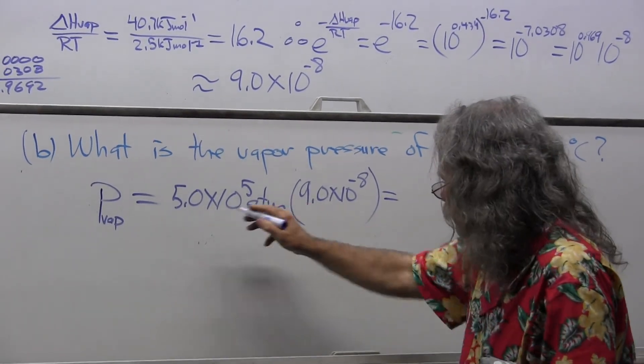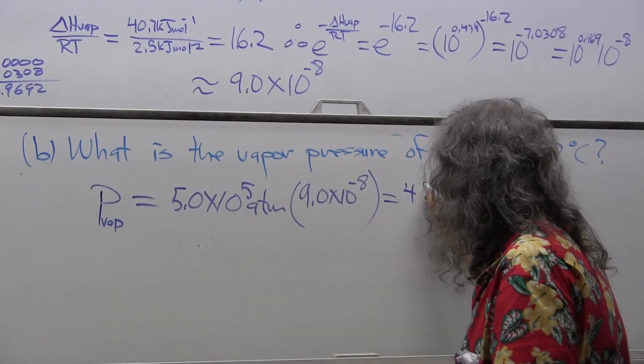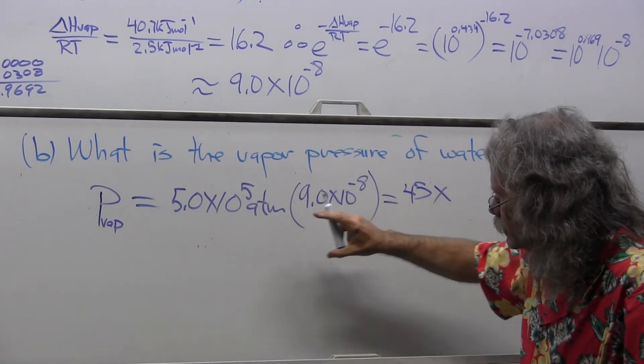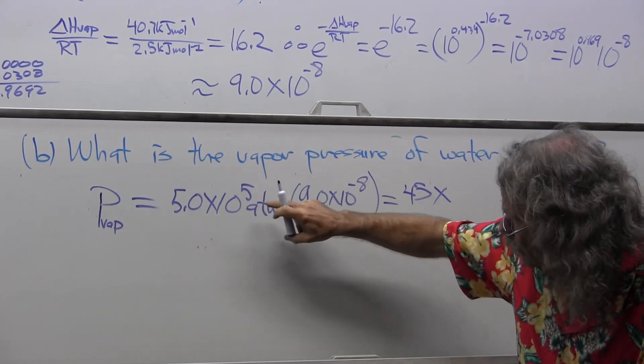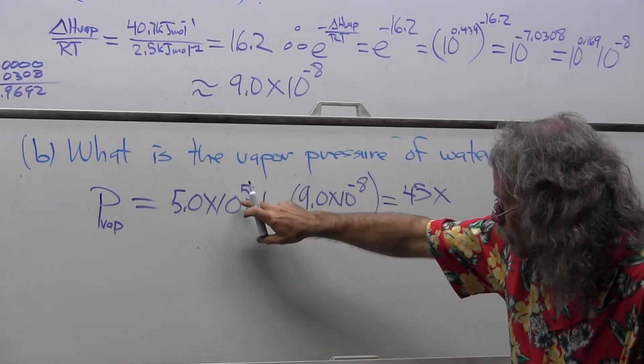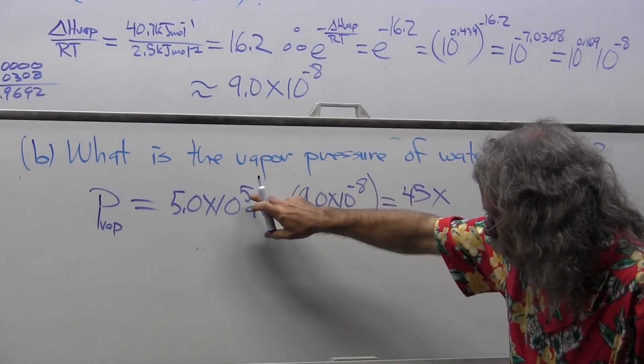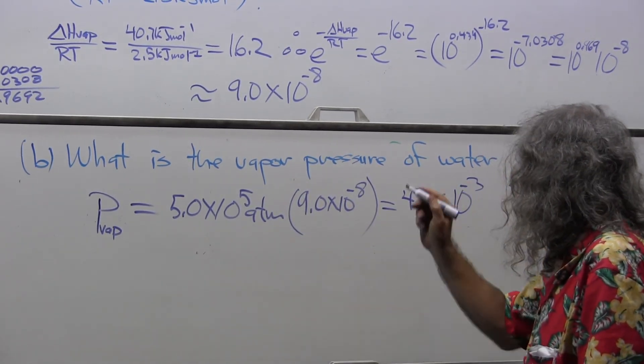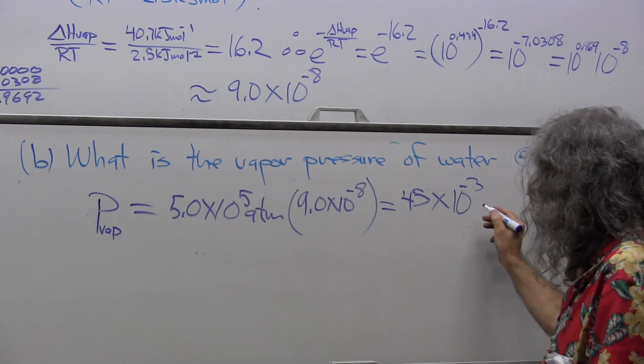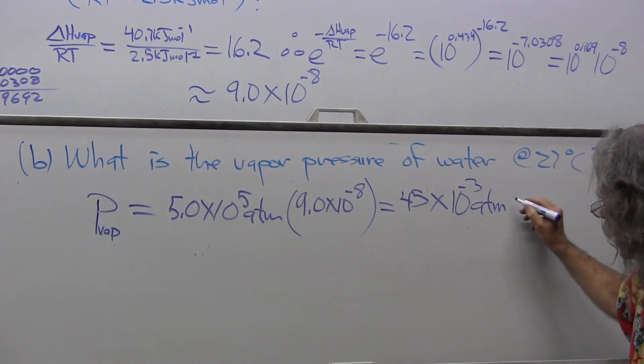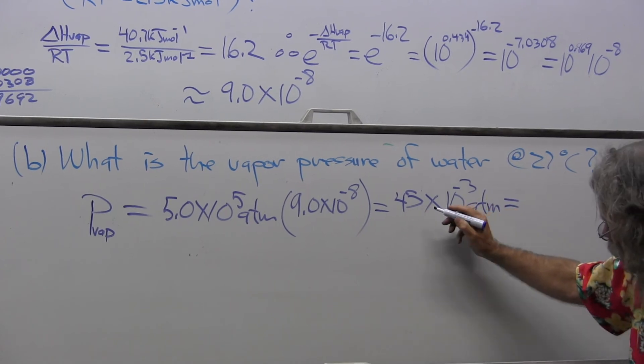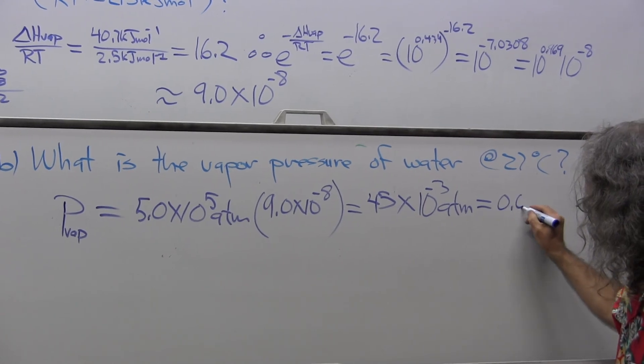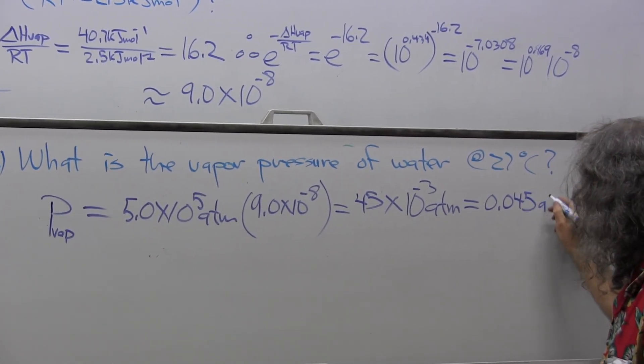That equals 9 times 5 is 45, and that would be times, and now the characteristic terms, the rules of exponents have me, when I multiply two numbers with the same base, I add the exponents. So, 5 minus 8, times 10 to the minus 3, and that would be units of atmospheres. That is going to be, I can easily take this, and now go 1, 2, 3: 0.045 atmospheres.